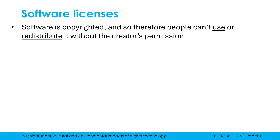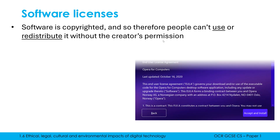The person who created this software owns the copyright — they can either give or decline permission to other people. For other people to use it or redistribute it, meaning to give it to somebody else, they need to get the creator's permission beforehand. And how is this permission given out? It's given out via software licenses.